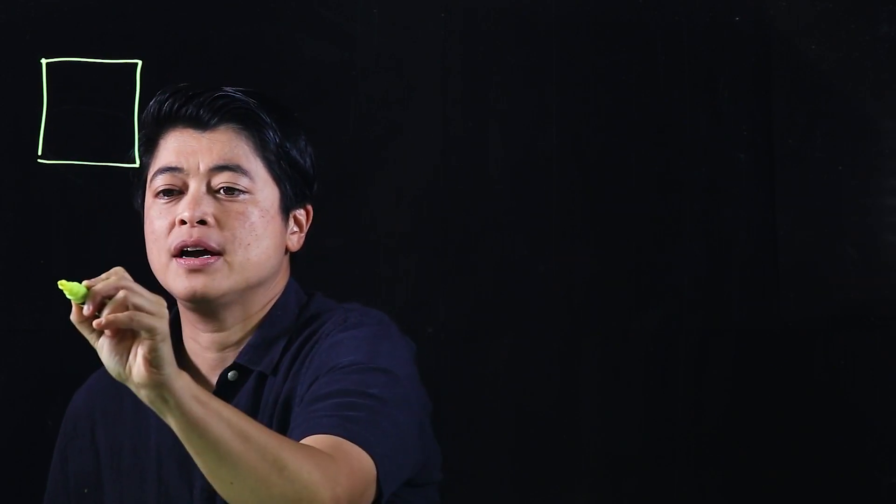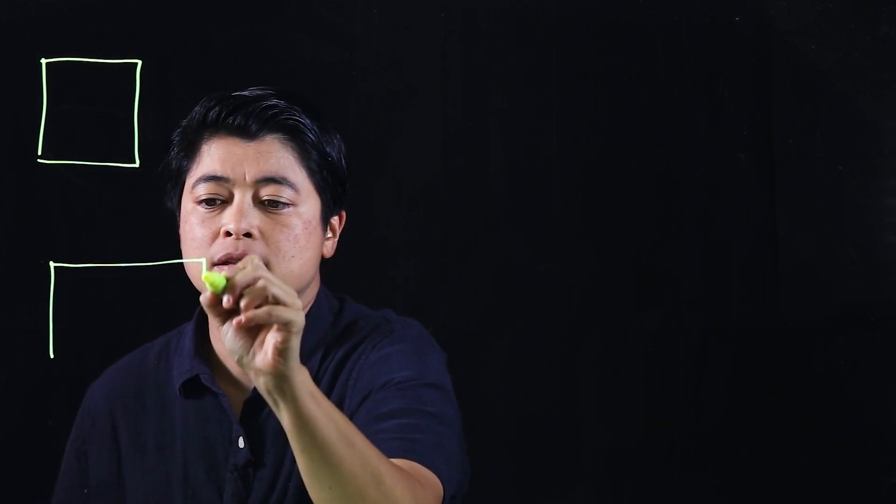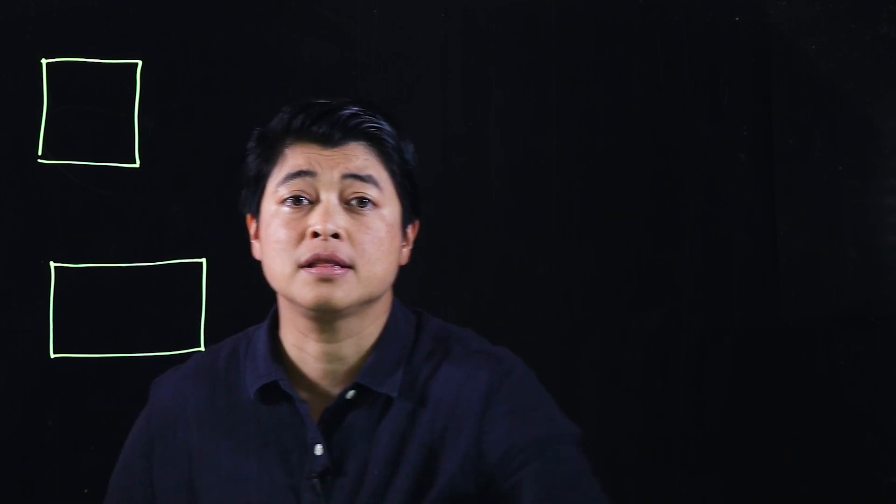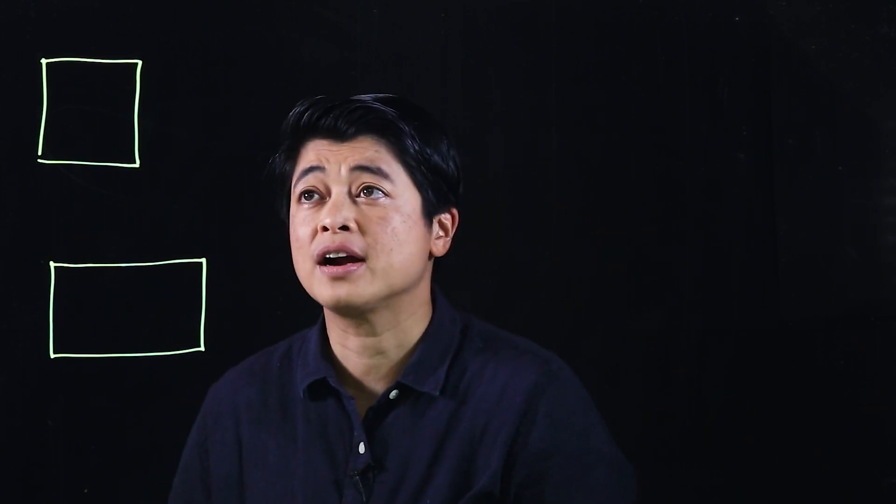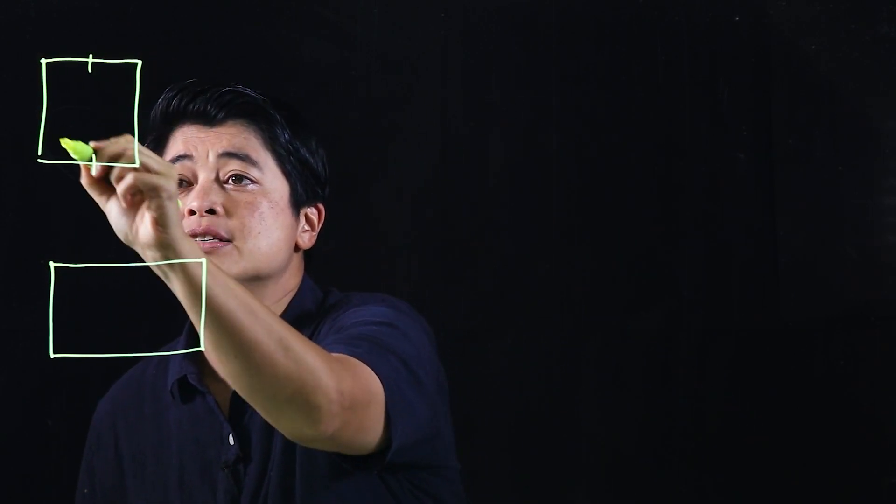We have a square and we have a rectangle. The difference between the two is with the squares, all sides are equal.